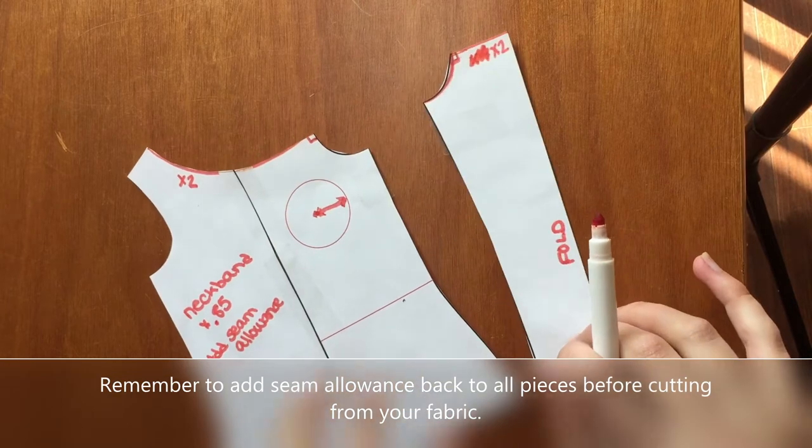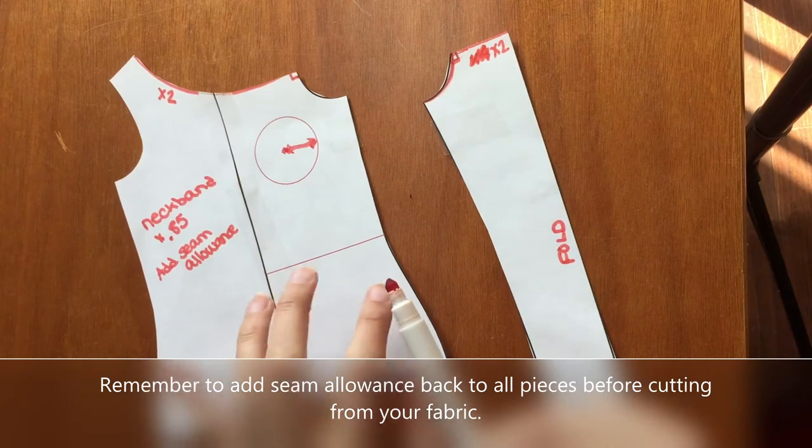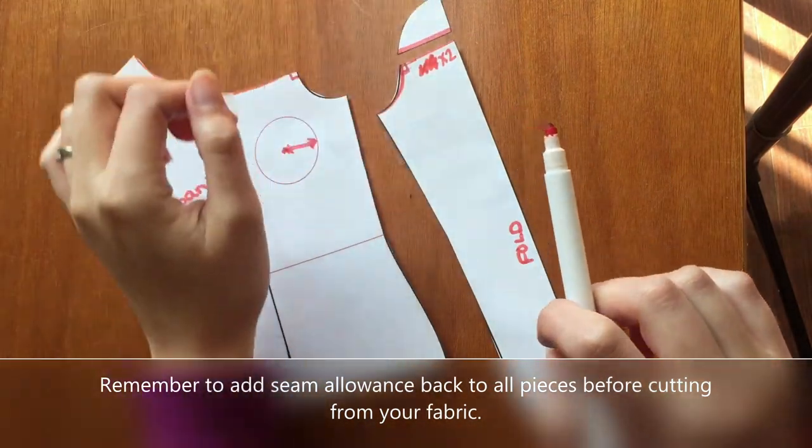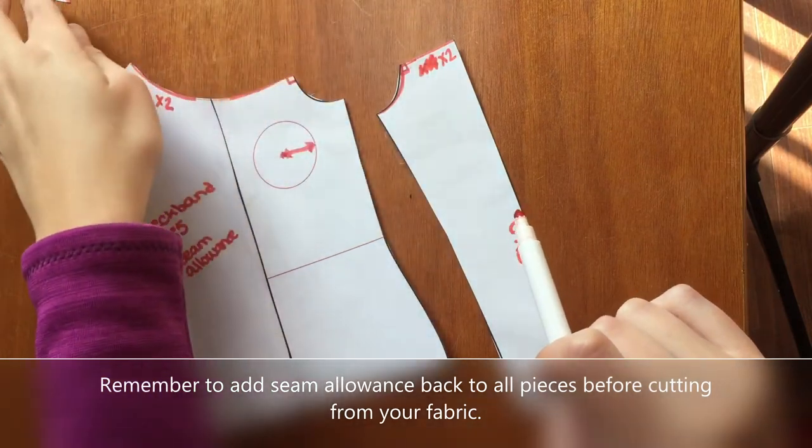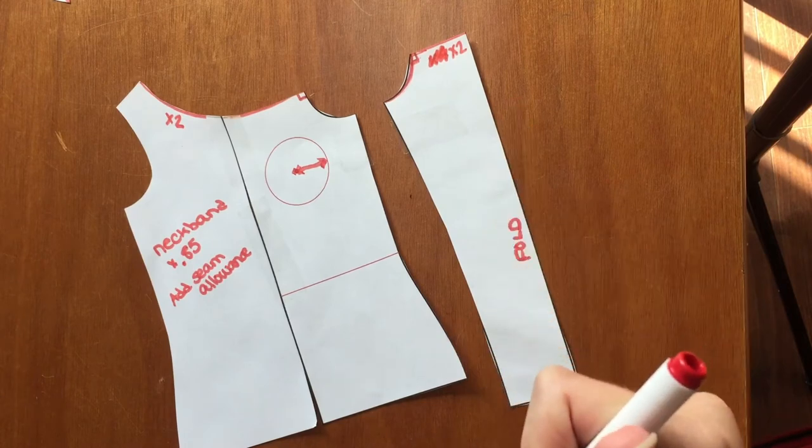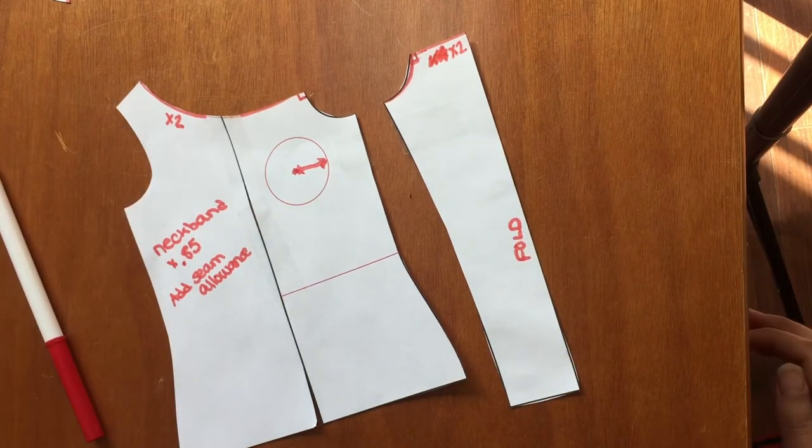So to sew this up, you're going to cut a front and a back. It's the same pattern piece. It's mirrored. You're going to cut your regular sleeve on the fold, if it's on the fold, and you're going to cut your cropped sleeve on the fold. Then what you're going to do is basically just follow, for the most part, the sewing instructions from your pattern.